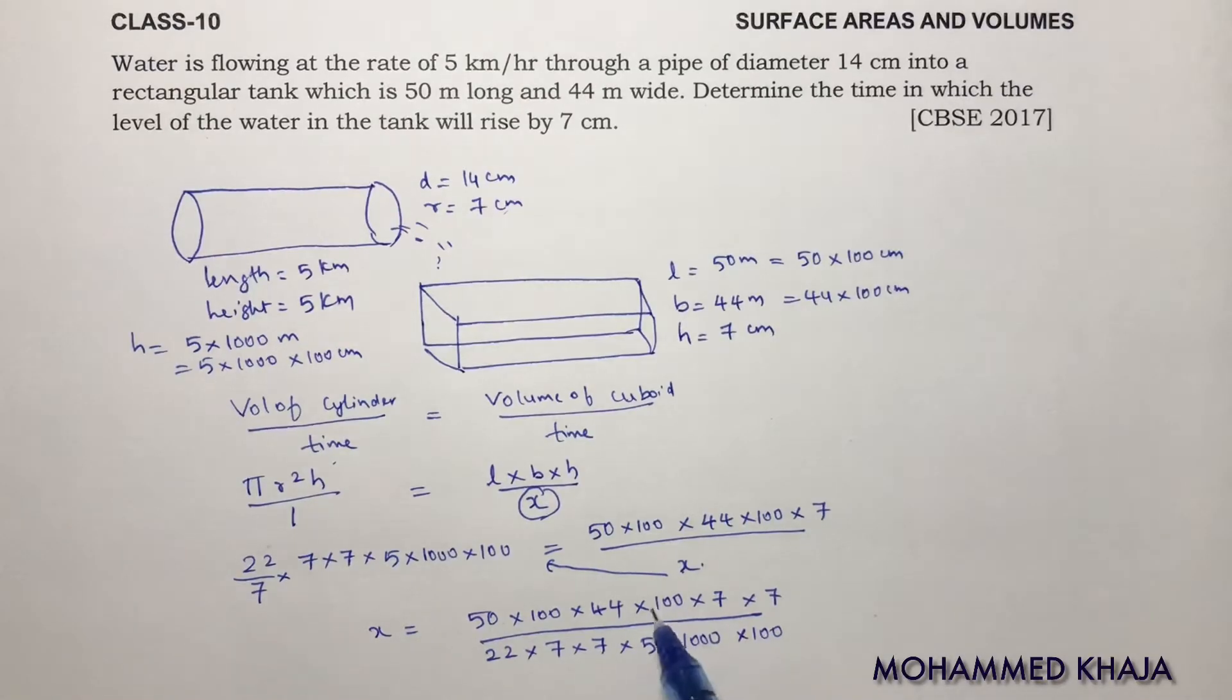Now slowly you cancel, you will get the time. 100 and 100, two zeros, two zeros. One more zero is there, you can cancel. 7, 7, 7, 7. 5, 5. So 22 times 1, 22 times 2. So nothing is left. You are left with x equals 2.